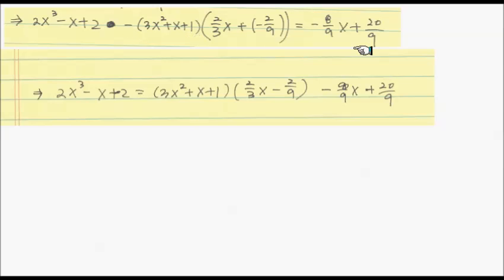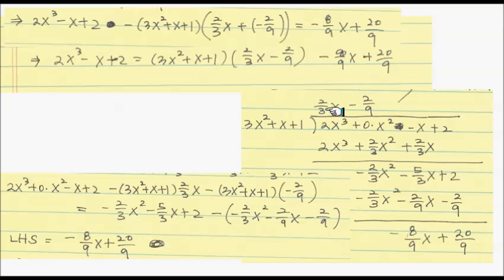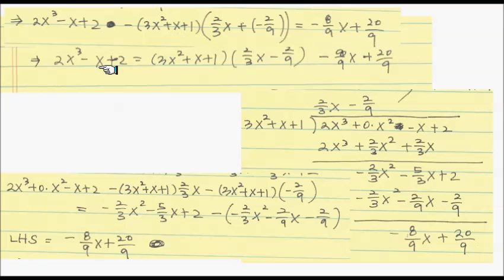If we move this entire term to the right-hand side by adding to both sides, we obtain the target statement: the dividend equals the divisor times the quotient plus the remainder. The quotient is the collection of all those terms, and the remainder is the linear polynomial. This is the entire division algorithm, with the first multiplication of 2/3 x and the second of negative 2/9, all simplified and boiled down to this clean algebraic identity.